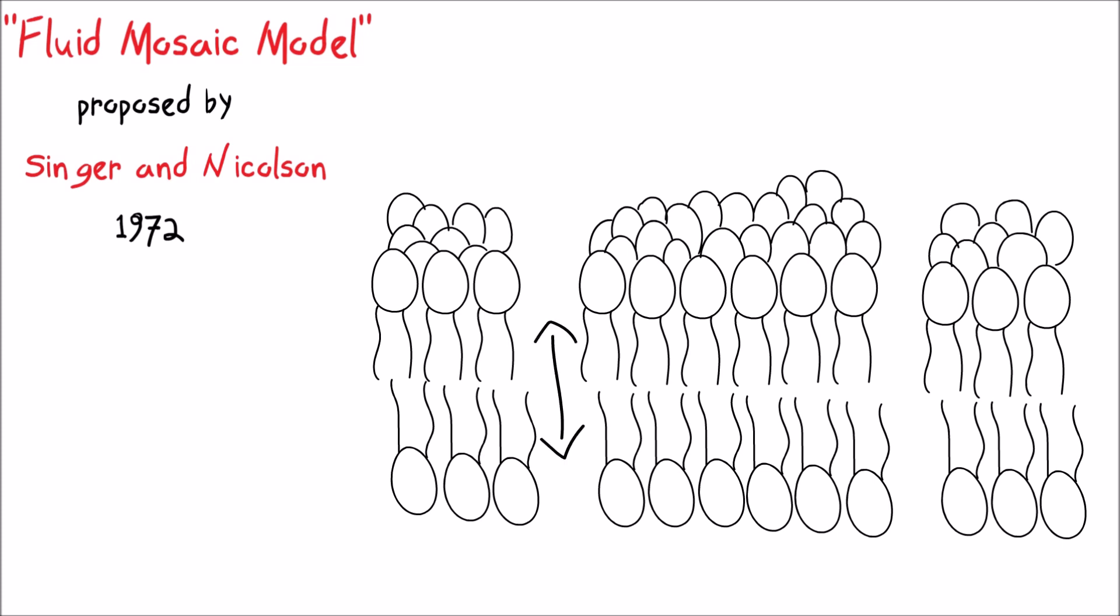with slight overlap. The plasma membrane is mainly composed of three components: phospholipids, protein, and cholesterol.